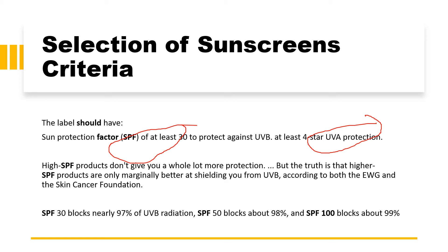Why is it not recommended to use very high SPF? Higher SPF products are only marginally better at shielding you from UVB radiations. SPF 30 blocks nearly 97% of UVB radiations, SPF 50 blocks 98%, and SPF 100 blocks 99% — still not 100%. So it is recommended to use SPF 30 along with 4-star rating UVA protection.